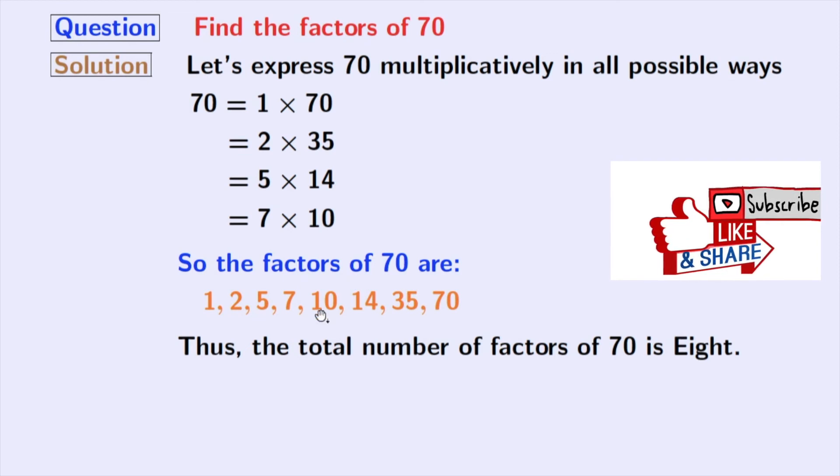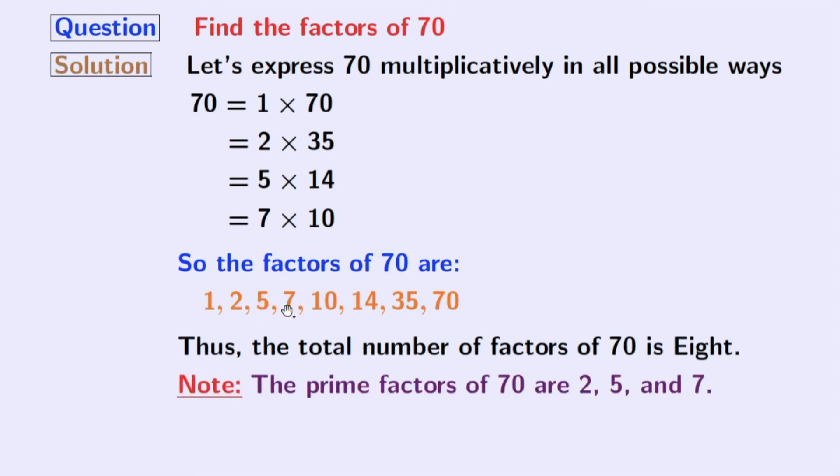Now, if we give a close look at these factors, we can see that 2, 5, and 7 among these numbers are prime numbers, because these numbers do not have any other divisor than 1 and that number itself. So, the prime factors of 70 are 2, 5, and 7.